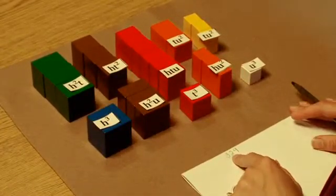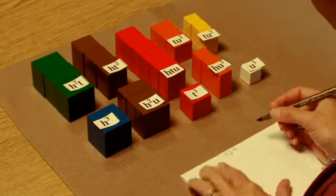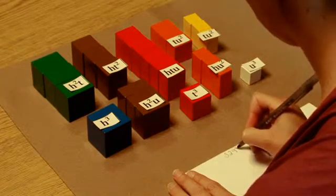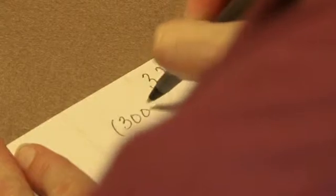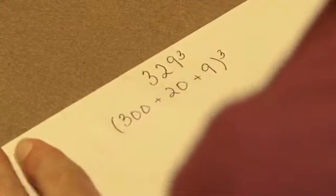With using the number 329, we're going to be cubing this, but I'm going to start by writing it in its expanded form. So 329 cubed would also be 300 plus 20 plus 9, and that's cubed.